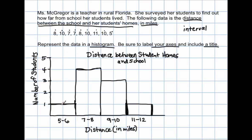Lastly, verify that you've counted properly. If you have 9 pieces of data, you should also have 9 students accounted for. We have 1 student in the first interval, 4 students in the second, 3 in the third, and 1 in the last. 1 plus 3 is 4, plus 4 is 8, plus 1 is 9 — so yes, it equals out, and I properly took care of all the data in the dataset.